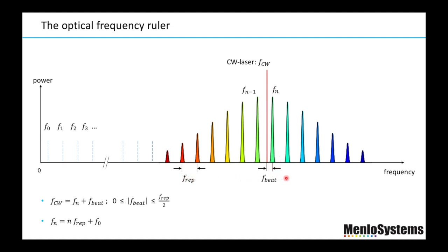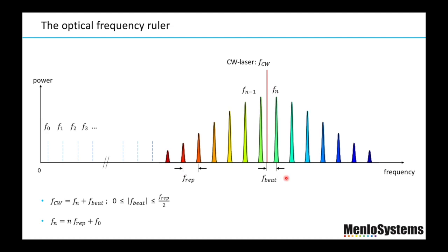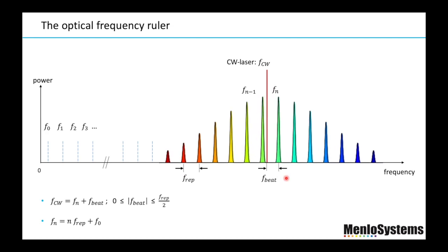When we do this, you can see that the beat signal increases as we saw in the spectrum analyzer. This implies that the frequency of the CW laser lies to the left of this mode, so we need to subtract the beat signal to the frequency of this mode.